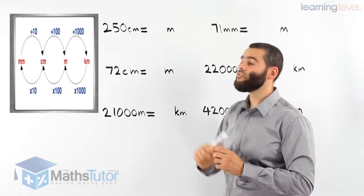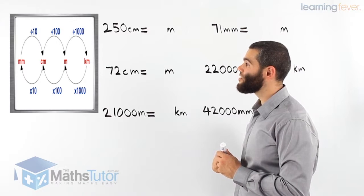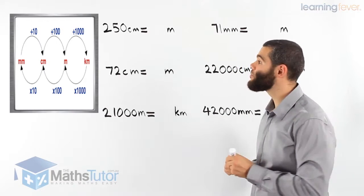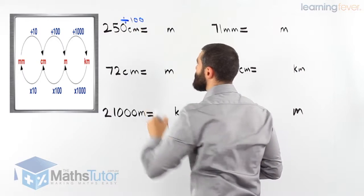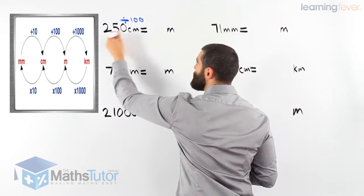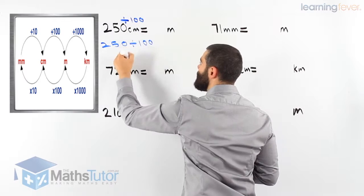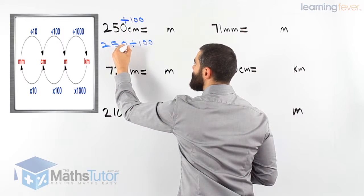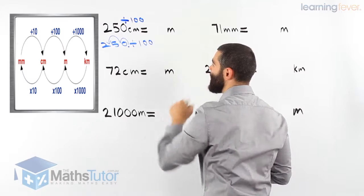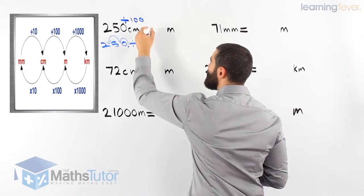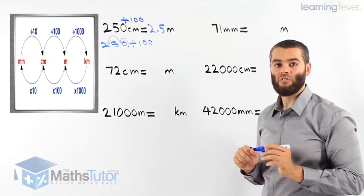Two hundred and fifty centimetres — we're going all the way to metres. From centimetres to metres, the process says we've got to divide by 100. So 250 divided by 100: the decimal point is at the end, we go backwards twice, giving us 2.5 metres. So 250 centimetres is exactly the same as 2.5 metres.